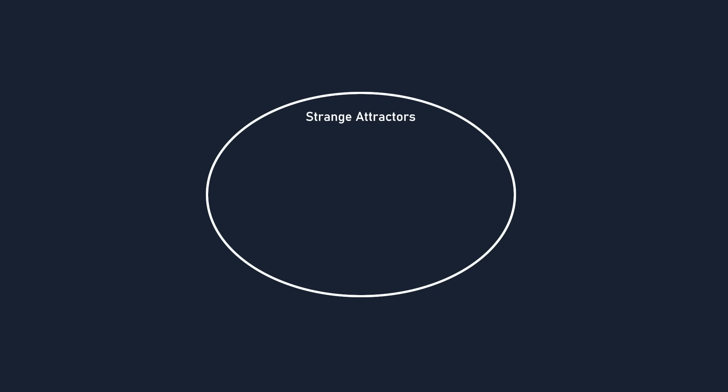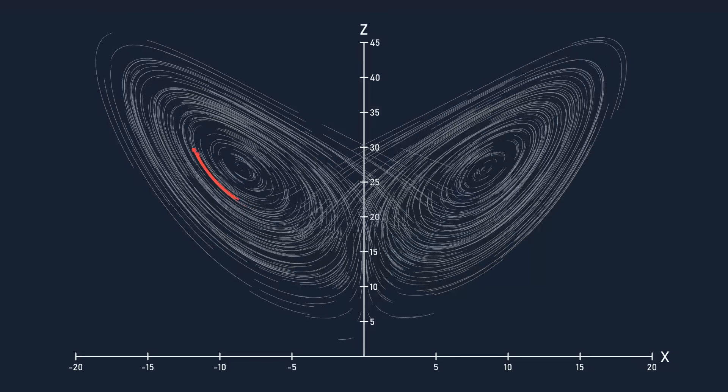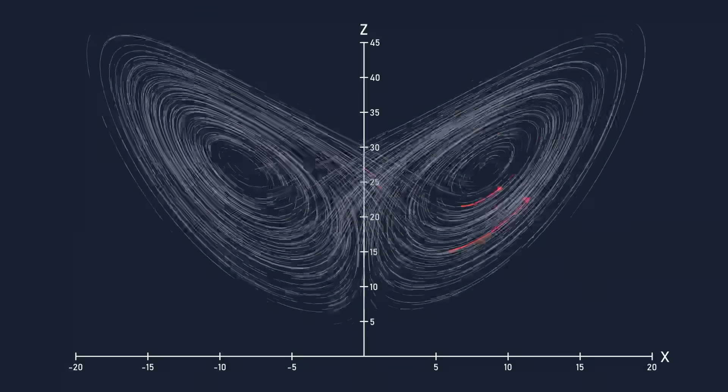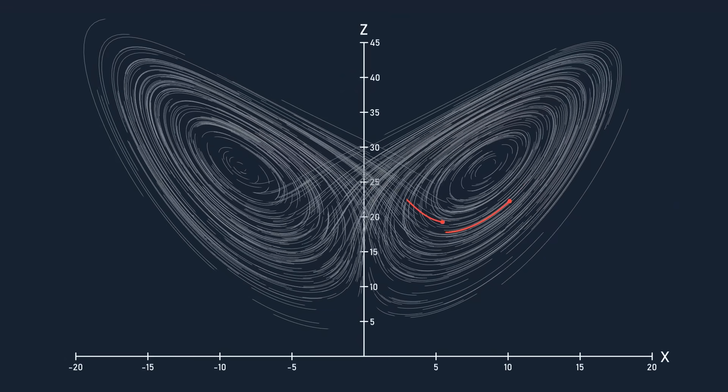A strange attractor isn't necessarily chaotic, but a chaotic attractor will always be strange. And the Lorenz attractor is a strange, chaotic attractor. Watch what happens when I highlight two trajectories that are initially a very small distance apart. It doesn't take long for them to diverge so much as to be on completely different paths. It turns out that in the early stages of this divergence, when the two trajectories are close to each other, the distance between them increases exponentially.